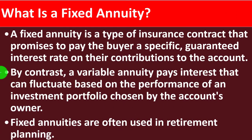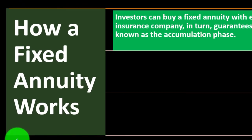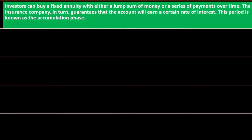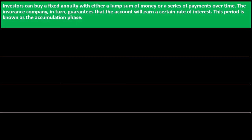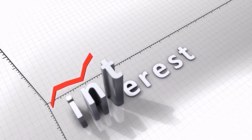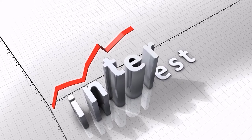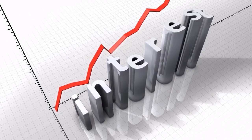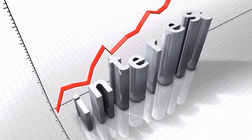Fixed annuities are often used in retirement planning. Investors can buy a fixed annuity with either a lump sum of money or a series of payments over time. The insurance company in turn guarantees that the account will earn a certain rate of interest — that's where it's 'fixed.' That locked-in interest rate makes everything more straightforward up front.